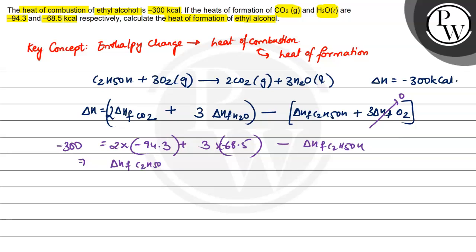This equals 2 times -94.3 plus 3 times -68.5. Minus minus becomes plus, so we add 300 kilocalories. This comes out to -94.1.